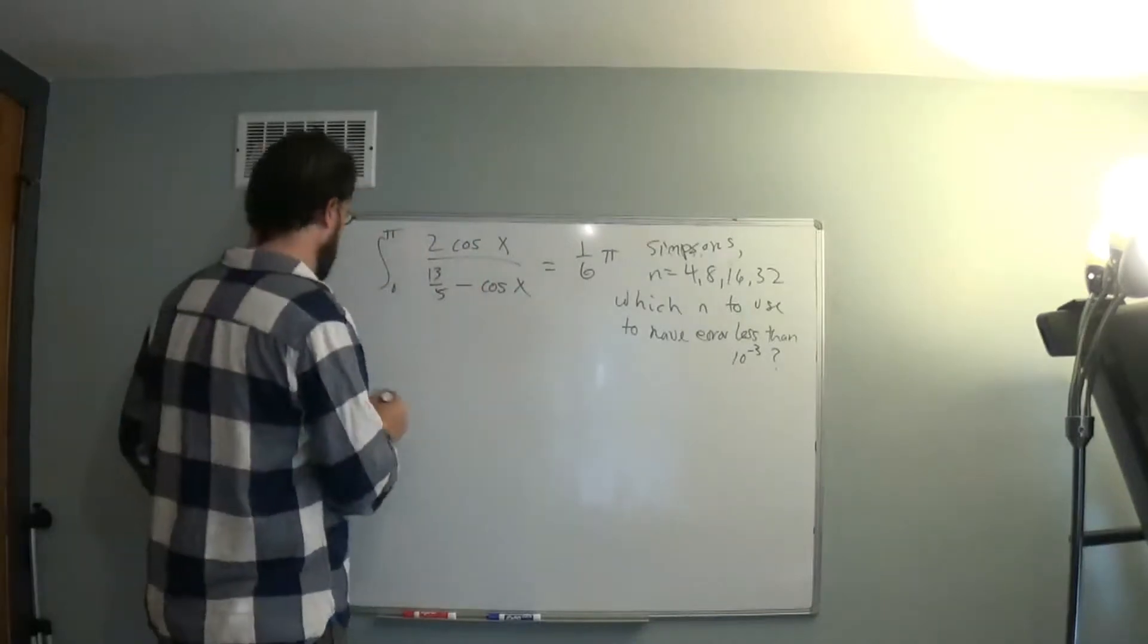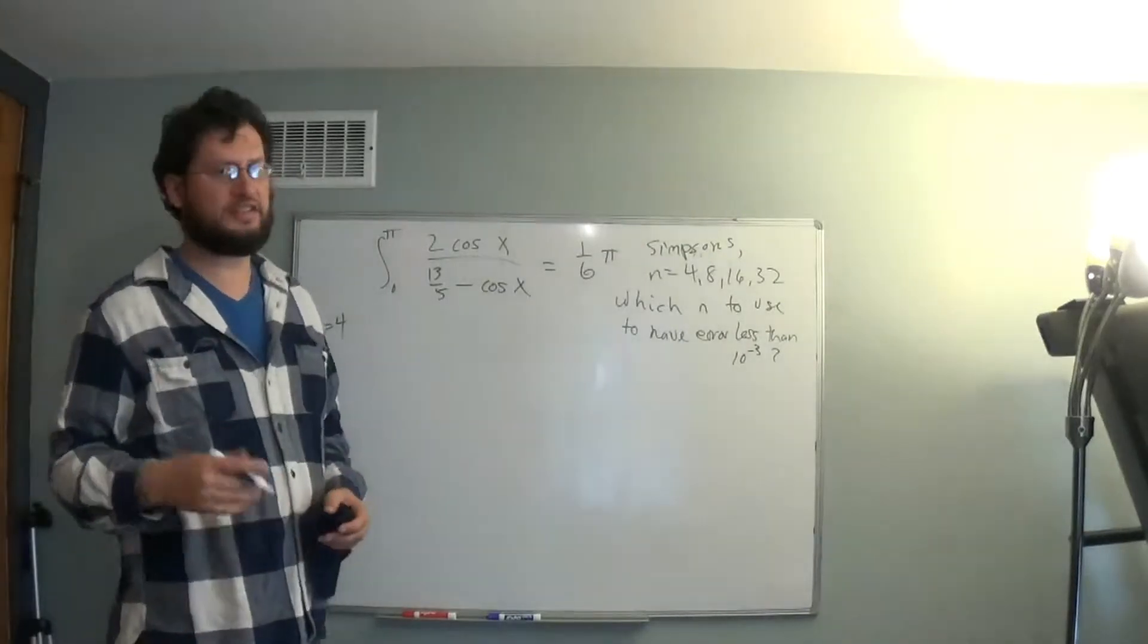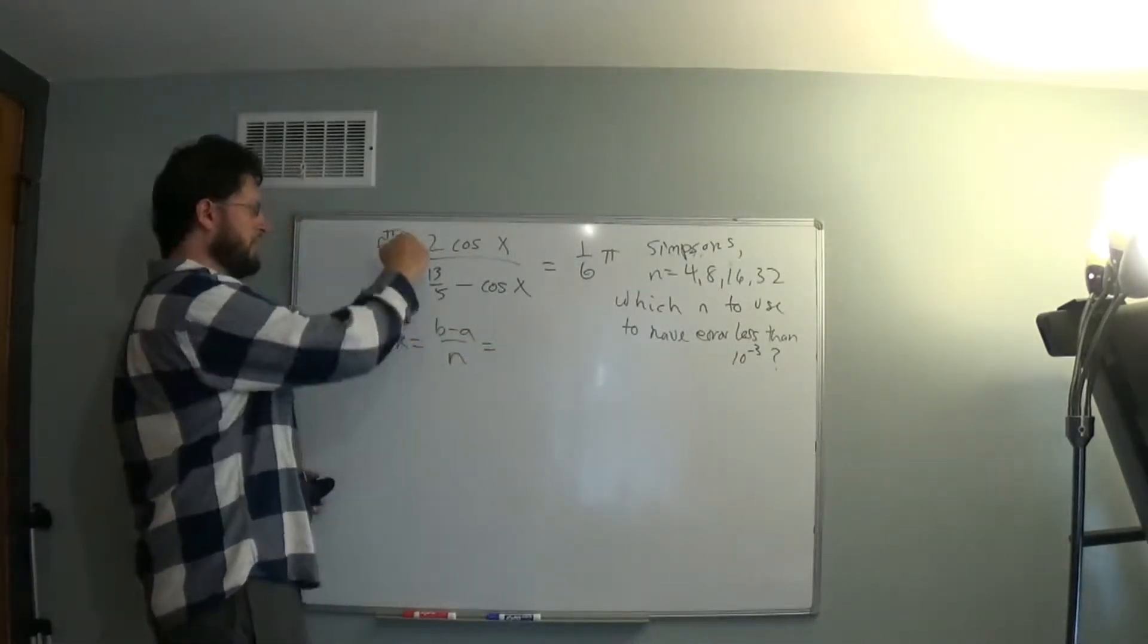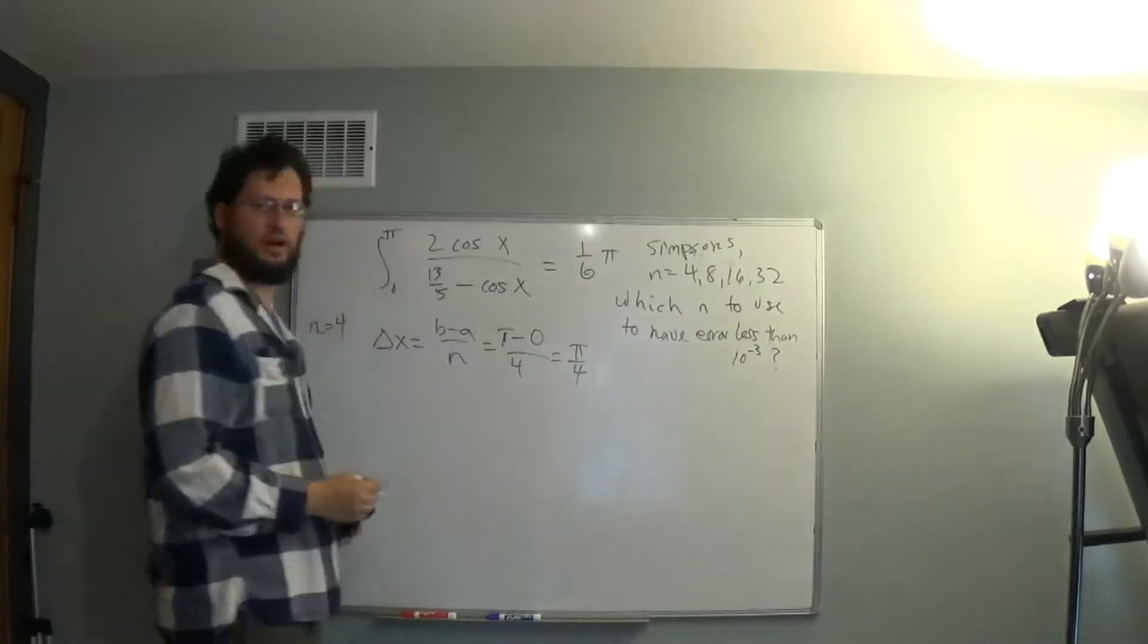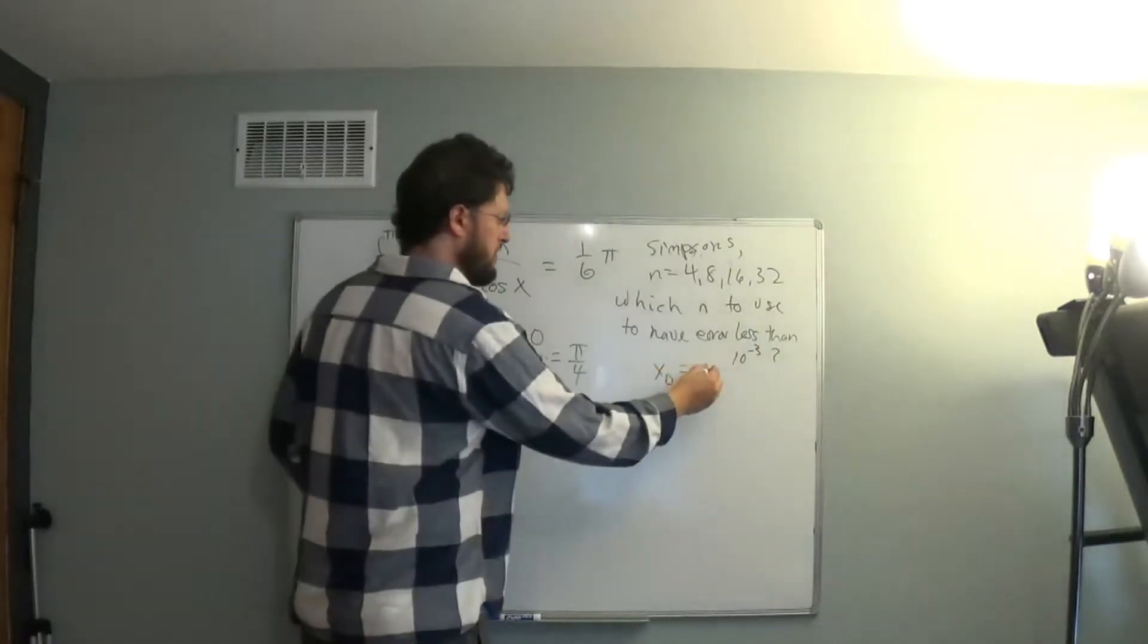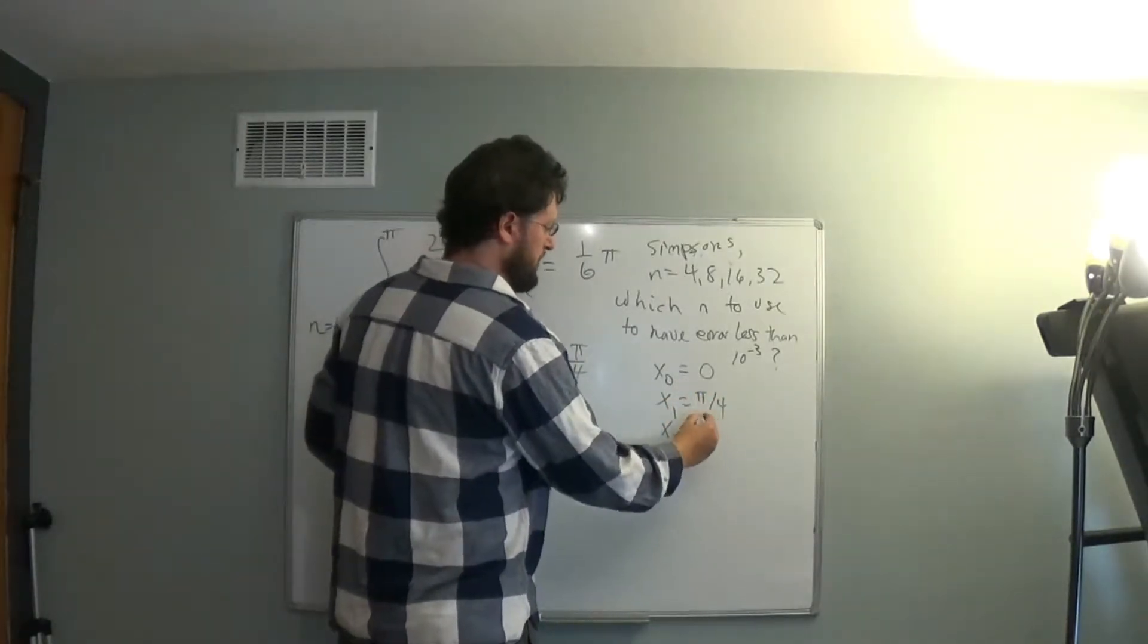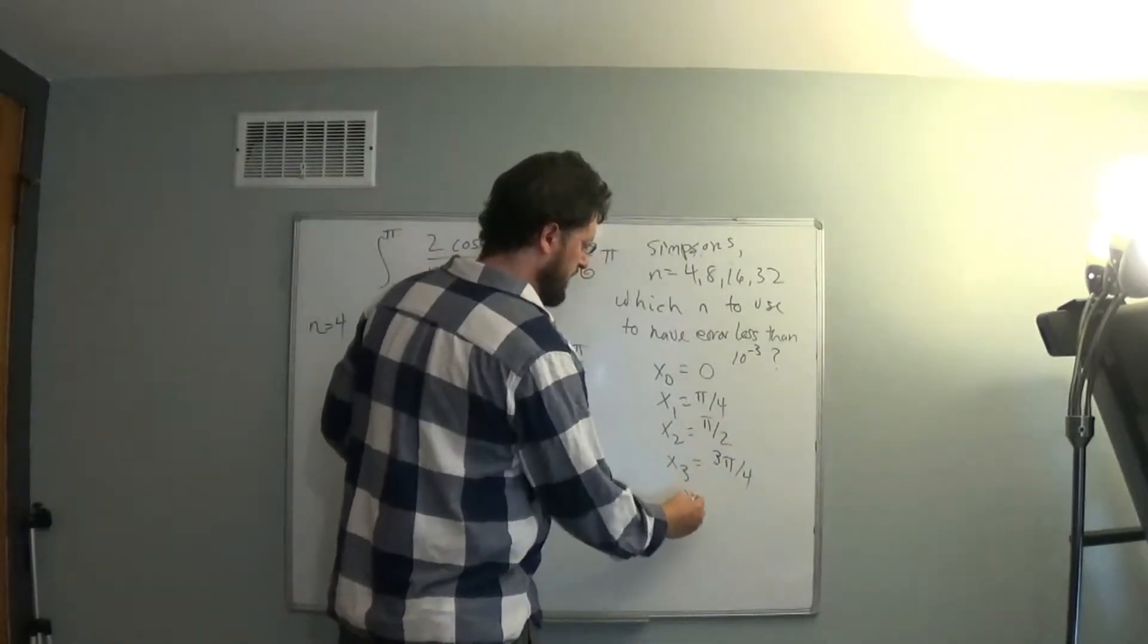So let's just start with n equal 4 and apply Simpson's rule. Our starting place is the same as with all of our numerical approximations. We find delta x. Delta x is b minus a over n, which in this case is pi minus 0 over 4, which is pi over 4. Our x0 is the starting value, which is 0, and then we add delta x until we get up to the ending value. So x1 is pi over 4, x2 is 2 pi over 4, which is pi over 2, x3 is 3 pi over 4, and x4 will be pi.